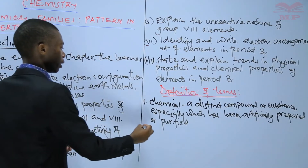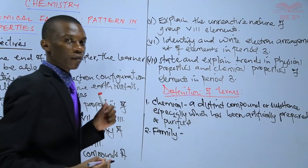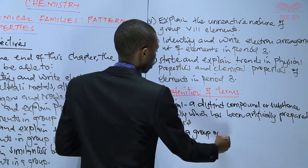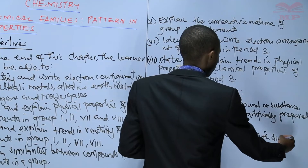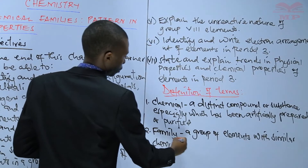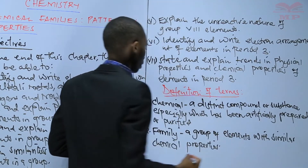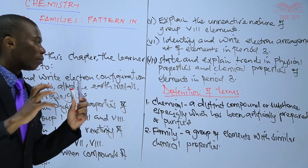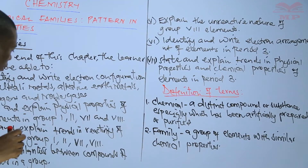The second term is 'family.' A family is a group of elements with similar chemical properties. So these elements have similar chemical properties.